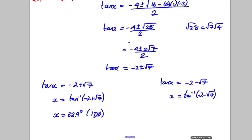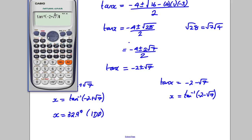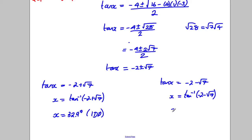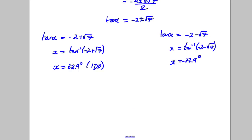And this one here, it would be negative 2 subtract root 7, so I get negative 77.9. So X is equal to negative 77.9 degrees. Now I need to check if there are any other solutions in case I'm missing some.